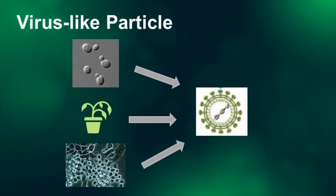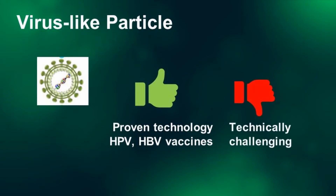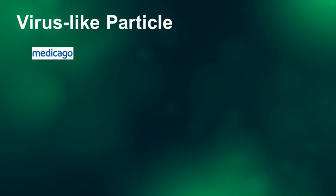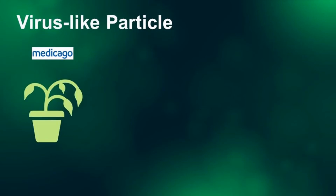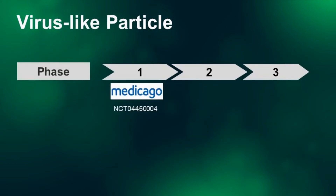Virus-like particles are assembled in lower organisms such as yeast cells, plant cells, or insect cells, as opposed to test tubes. It's a proven technology — for example, the human papillomavirus vaccine and hepatitis B vaccine are virus-like particles approved for commercial use. However, virus-like particles are difficult to produce. Medicago, a Canadian company, is making a COVID virus-like particle using plants as incubators. The particles they produce do resemble the COVID virus, and the vaccine is now in Phase 1.